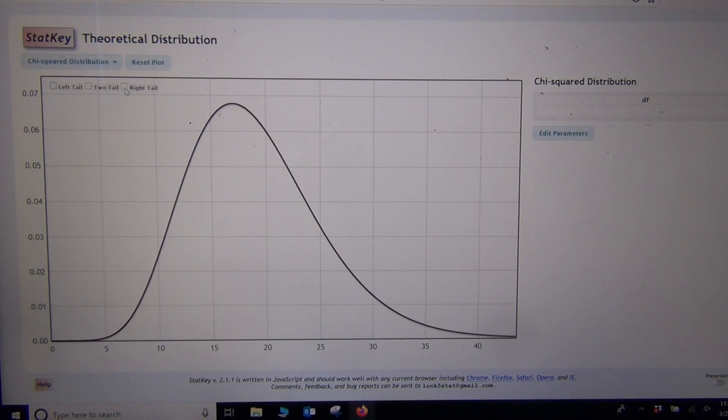But if we were using it for a variance confidence interval, we'd want to actually click two tail. It works just like the other ones.